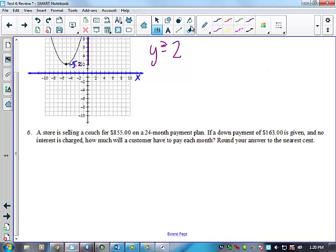Okay, so a store is selling a couch for $855 on a 24-month payment plan. And there's a down payment of $163 given. No interest is charged. How much will the customer have to pay each month? Round your answer to the nearest cent. Okay? So, I need to set up an equation for this. What would that equation be? Riley, what do you got?